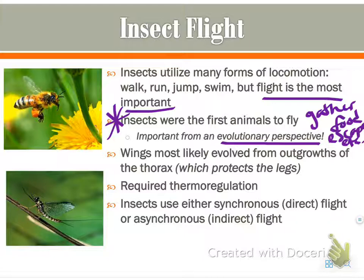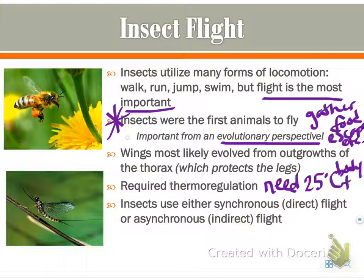They also require thermoregulation, which means they need a body temperature of 25 degrees Celsius or higher — a minimum of 25 degrees. They can use two types of flight: synchronous or direct flight, or asynchronous or indirect flight, which we'll examine on the next slide.